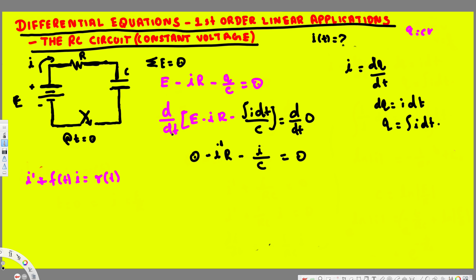Now in standard form we need I-prime alone — no negative sign or R multiplied with it. To bring this into standard form, we divide everything by negative R. Doing that, we get I-prime plus I over RC equals zero. Notice this is now a separable equation.